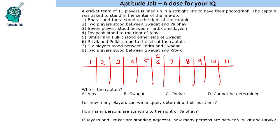Reading the instructions, we can see there is a lot of mention of Swagat, so let's start with him. It says two players stood between Swagat and Vaibhav, and two players between Swagat and Rithvik. Also, Omkar and Pulkit stood on either side of Swagat — so if this is Swagat, then we have Omkar and Pulkit on either side.